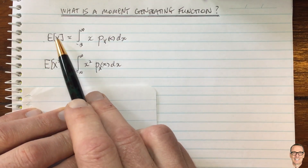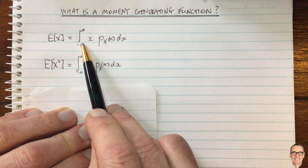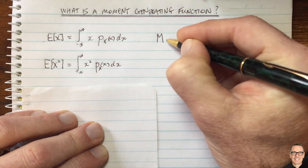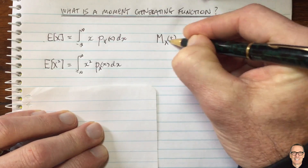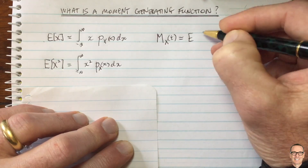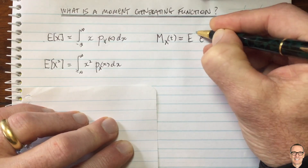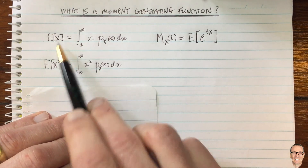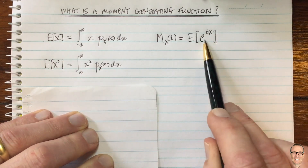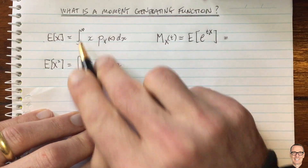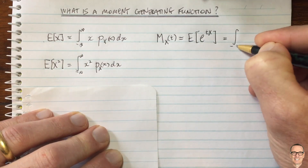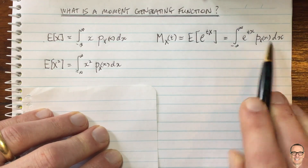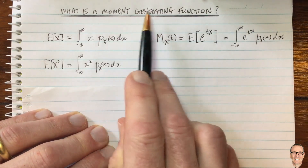The moment generating function is another function which actually allows you to generate all of these moments more directly than calculating these integrals. Its definition: we use capital M with subscript x for the random variable x, and it's a function of a variable t. It's defined as the expected value of e to the tx. We can calculate this by integrating from negative infinity to infinity of e to the tx times the pdf of x dx.